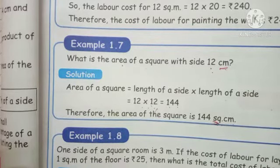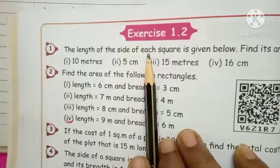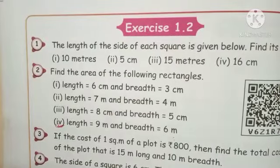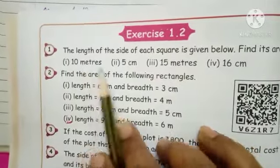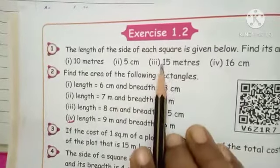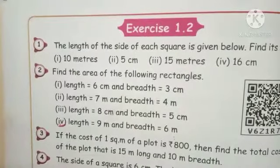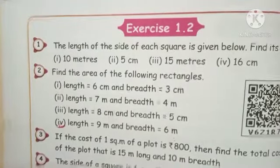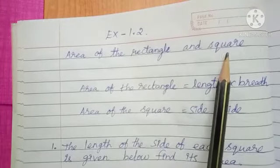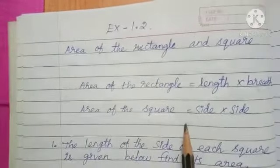Shall I move to exercise number 1.2? Exercise number 1.2: the length of the side of each square is given below — find its area. Four sums are given: 10 meter, 5 centimeter, 15 meter, 16 centimeter. These are the side values of each square. Formula to remember: area of rectangle equals length multiply breadth; area of square equals side multiply side.